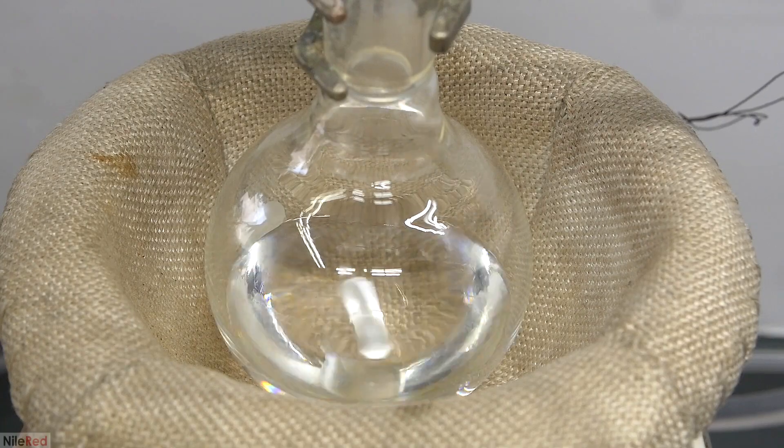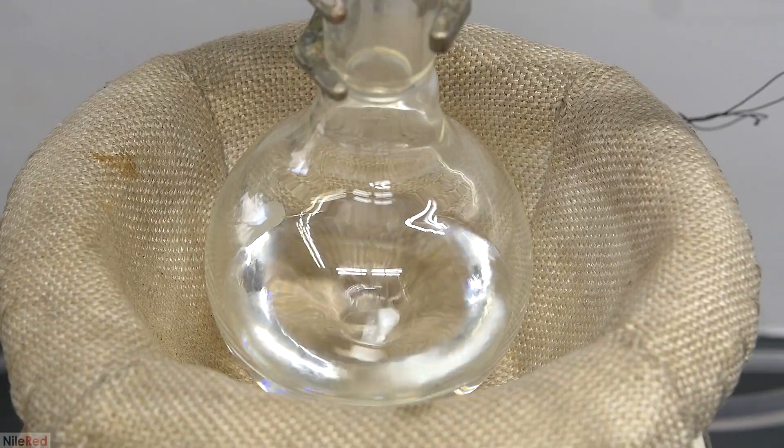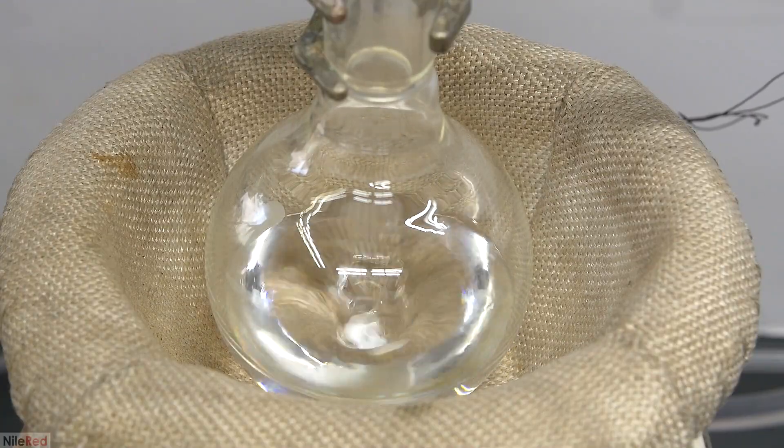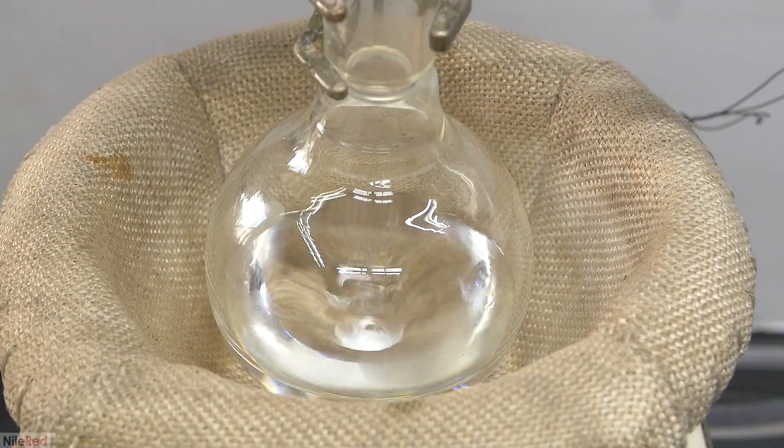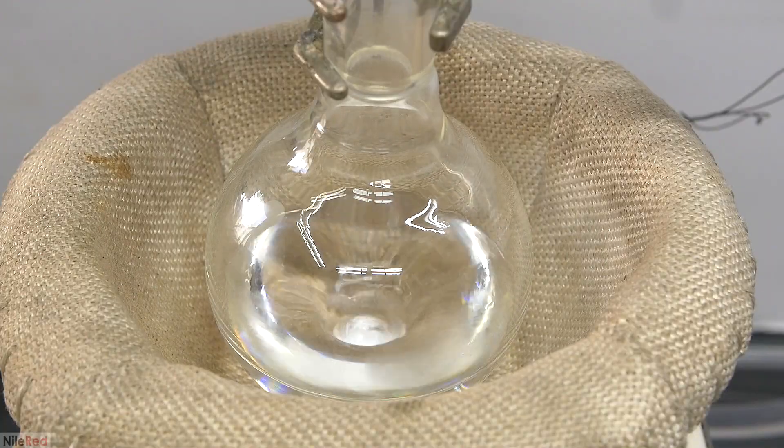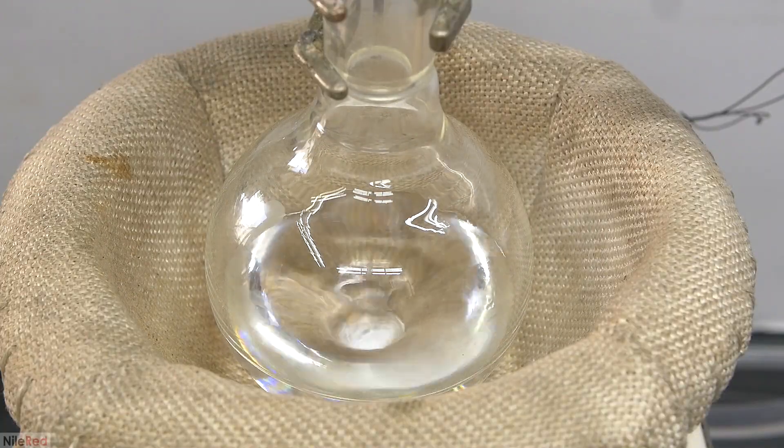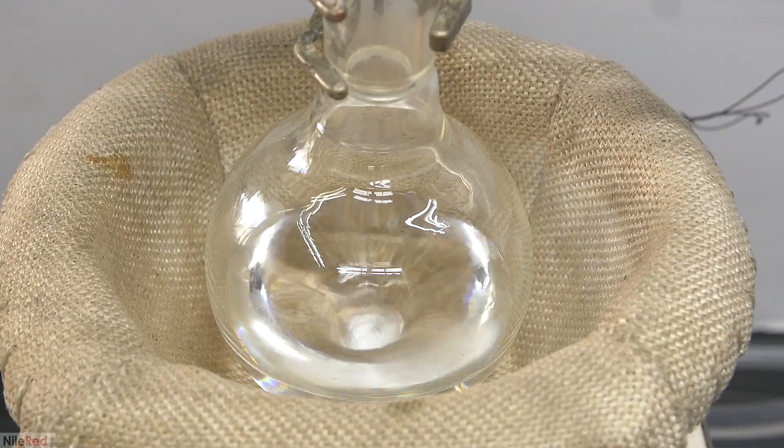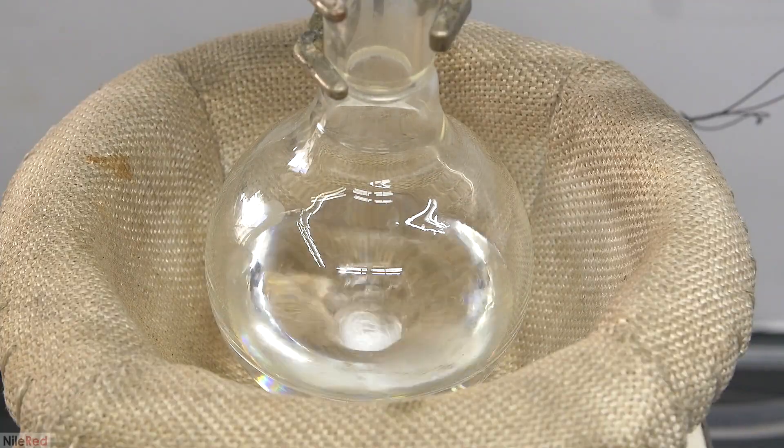When we're ready to get things going, I lower the flask into the heating mantle, and I turn on the stirring. I then turn on my vacuum pump, and not too long after, the benzaldehyde starts to bubble a little bit. At this point, everything's still at room temperature and there's no heating.